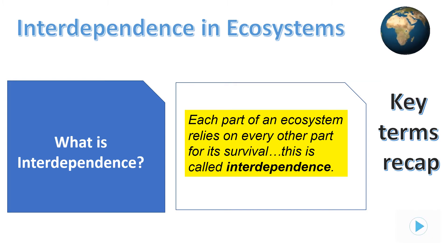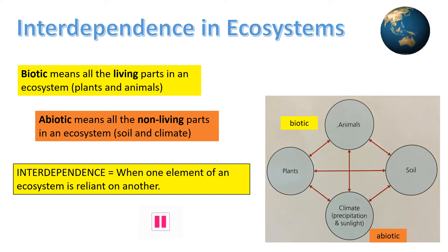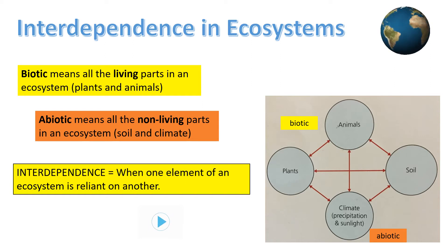Interdependence in ecosystems looks at the interrelationship between all the key components seen in the diagram on screen. These are made up of the biotic components, which are all the living plants and animals within an ecosystem, along with the non-living abiotic parts such as climate and soil within an area.